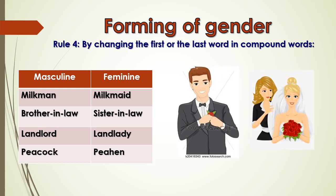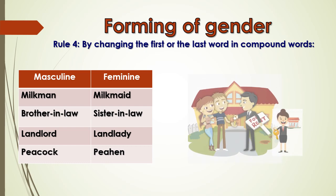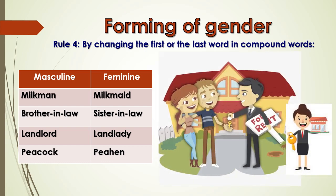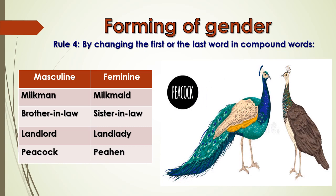Brother-in-law becomes sister-in-law — we removed the word brother and replaced it with sister. Similarly, landlord becomes landlady, and peacock becomes peahen.